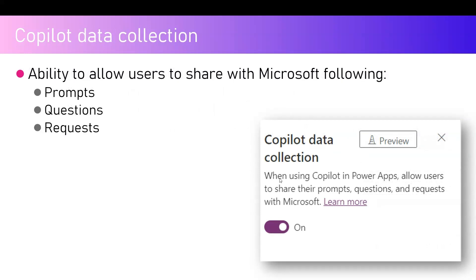The next setting is Copilot Data Collection. When using Copilot in Power Apps, users add prompts, ask questions, and make requests to Copilot. If you want those prompts and requests shared with Microsoft for product improvement, you can turn this feature on. Many organizations will not want to share prompts or questions with Microsoft, so if you're a Power Platform admin, make sure to turn this off if you don't want any information shared.